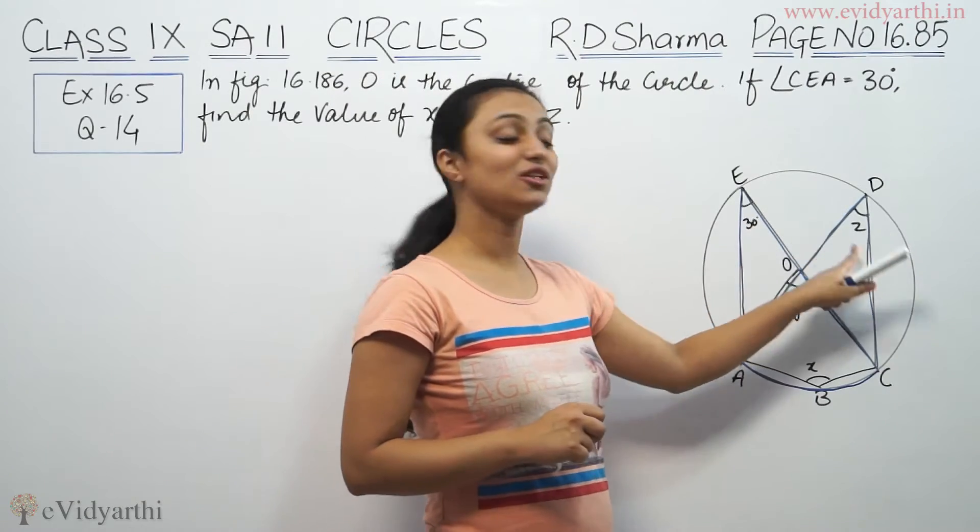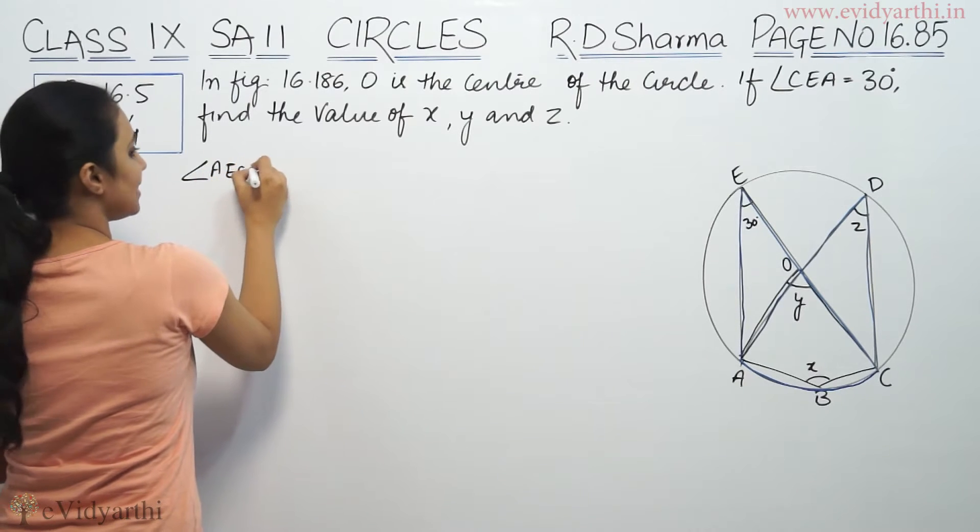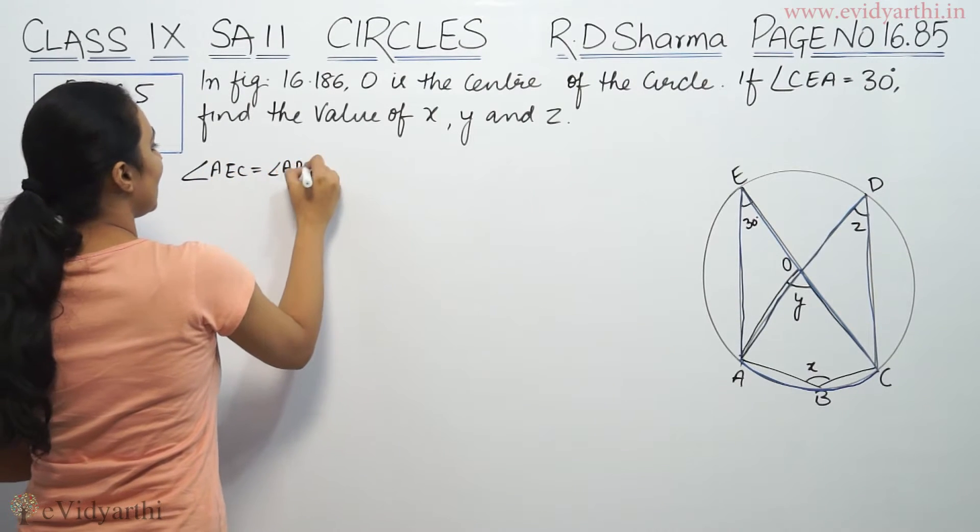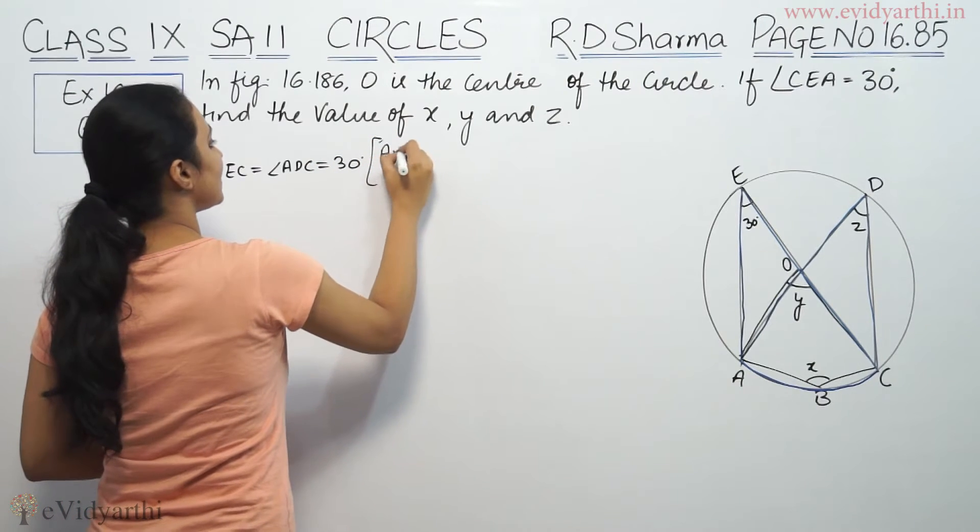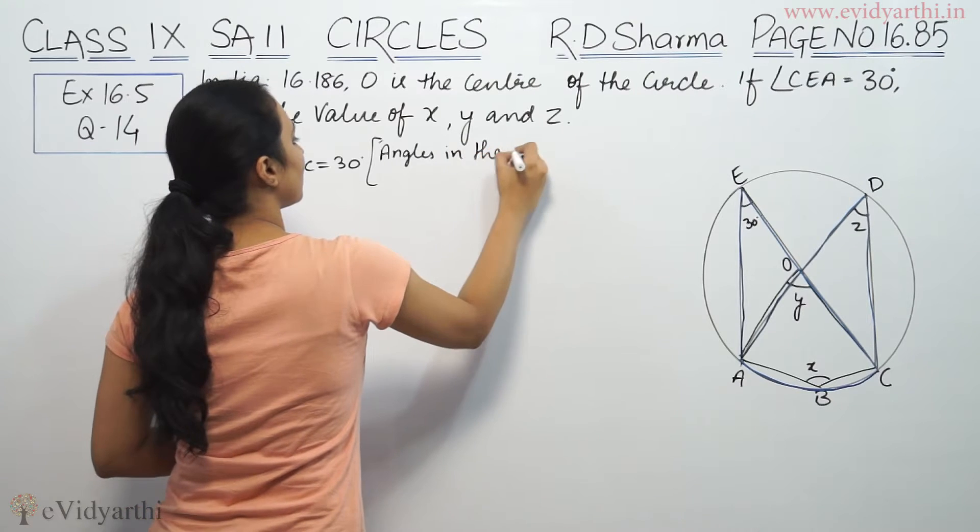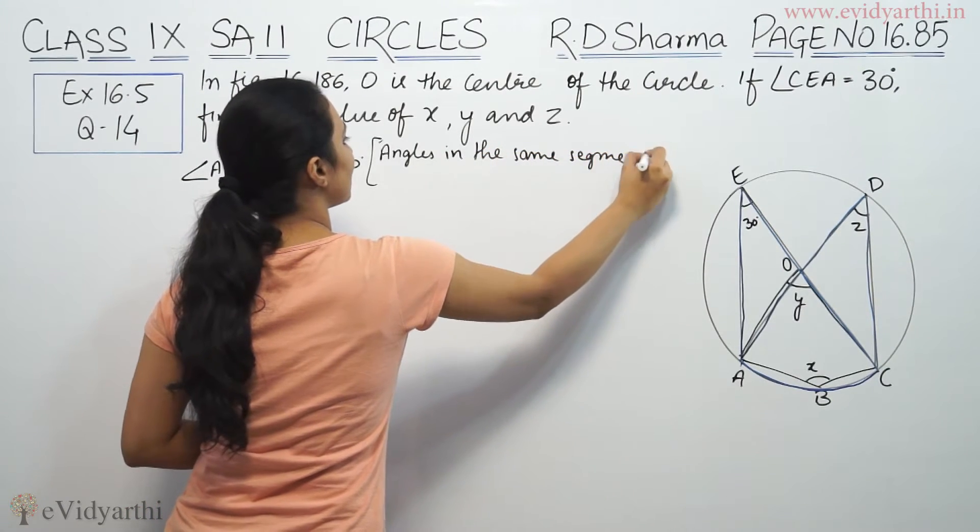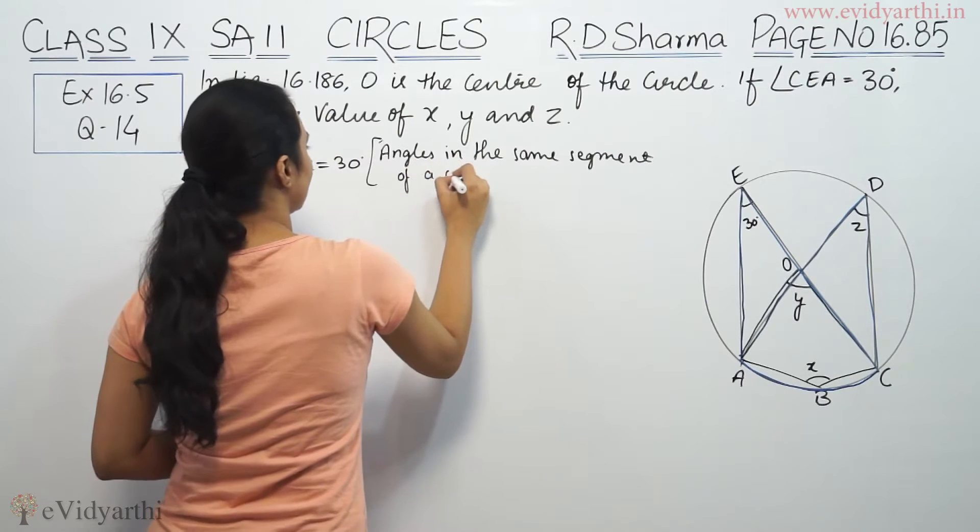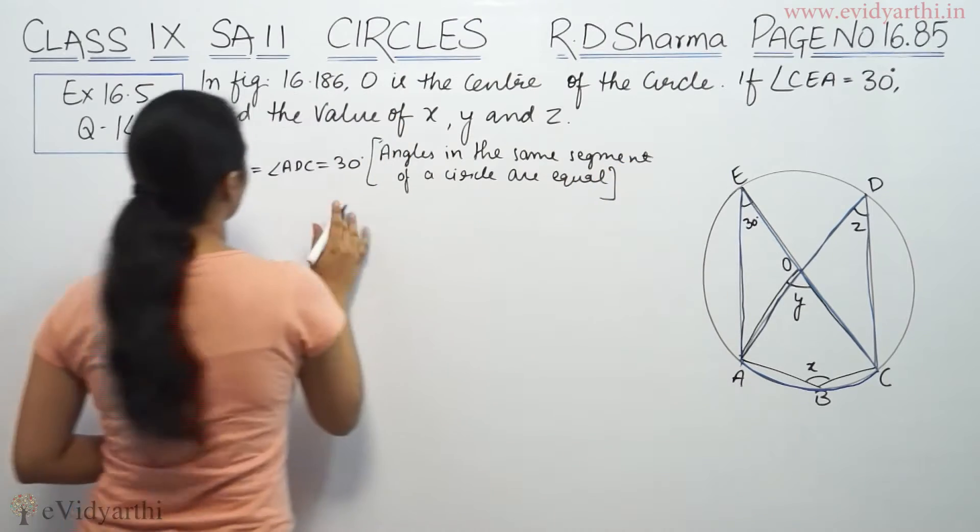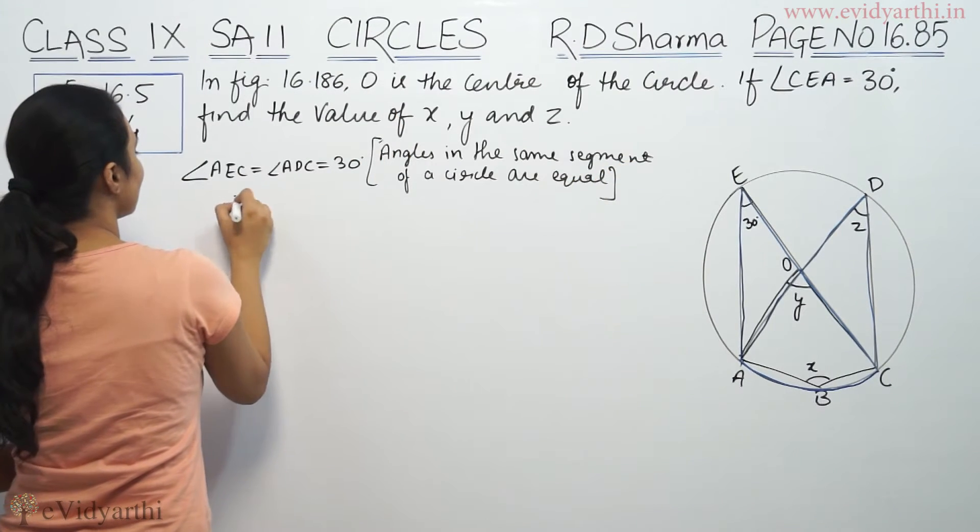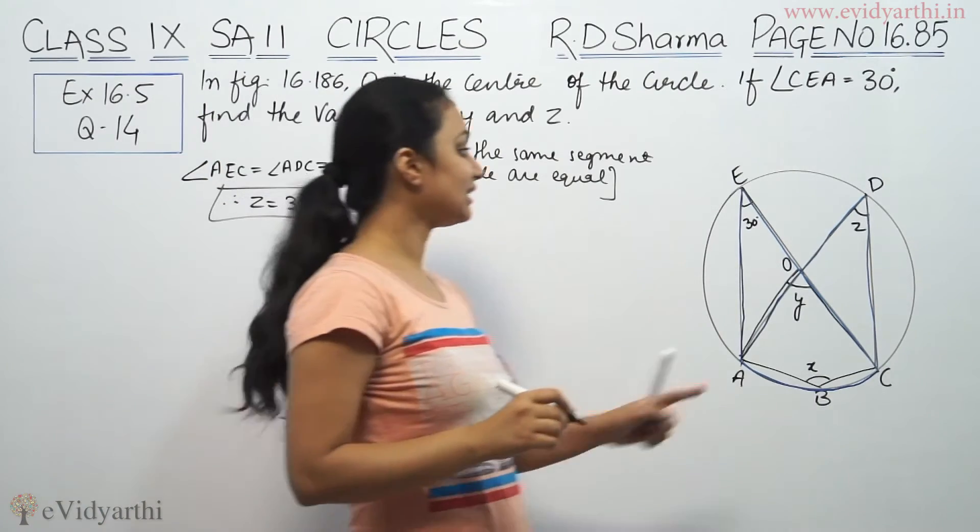So if this is 30, this will also be 30. So you will write angle ADC is equal to 30 degrees. The reason is angles in the same segment of a circle are equal. So this means we have Z equal to 30 degrees.